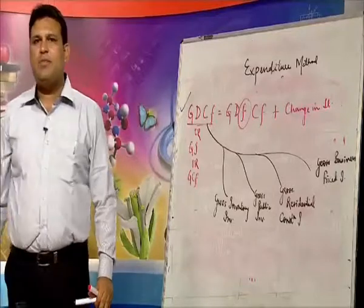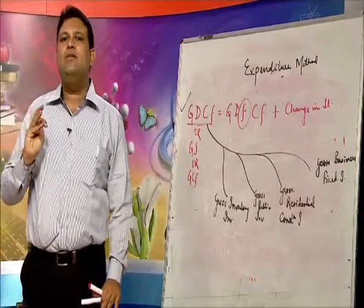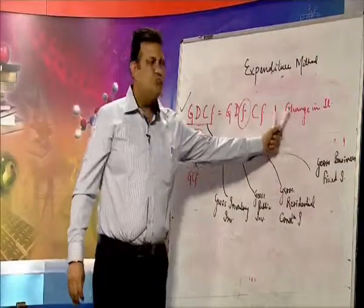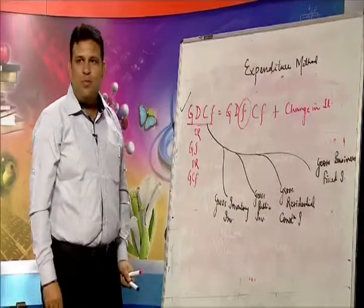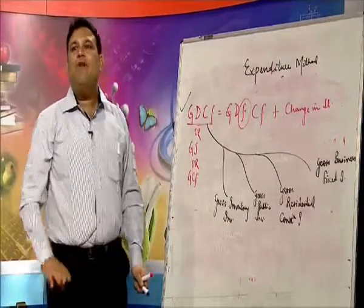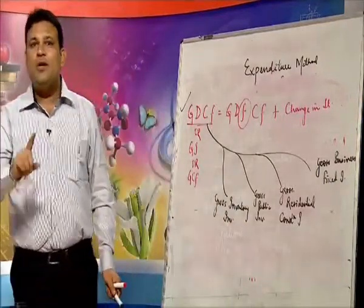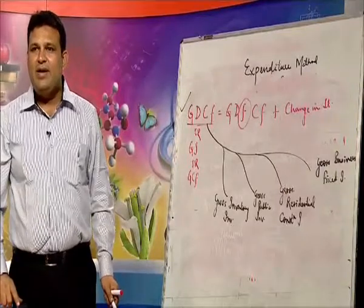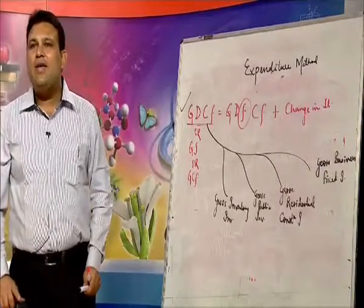To recall: the expenditure method includes private final consumption expenditure, government final consumption expenditure, gross domestic fixed capital formation (if it is fixed, add change in stock), plus net exports. This gives GDP at MP. Deduct depreciation to get NDP at MP. Deduct NIT (net indirect taxes) to get NDP at FC.